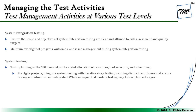The next level is system testing. Here, planning is tailored to the SDLC model with careful allocation of resources, tool selection, and scheduling. For agile projects, system testing is integrated with iterative story testing, avoiding distinct test phases, and ensuring testing is continuous and integrated. In sequential models, testing may follow planned stages. Resource allocation, tool selection, and timeline effectiveness play a very vital role when performing the many executions relevant to system testing.